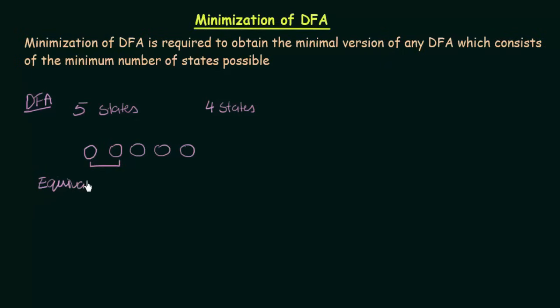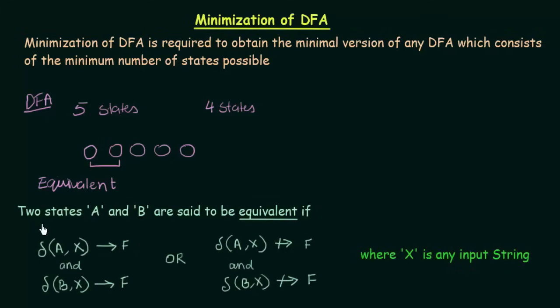When they are equivalent. Now, when are 2 states said to be equivalent? What is the meaning of equivalence? 2 states A and B are said to be equivalent if state A on getting a particular input string X, here X is any input string, so if the state A on seeing the input string X goes to a final state, and at the same time, if state B also on getting that same input string goes to any of the final states, then A and B are said to be equivalent.